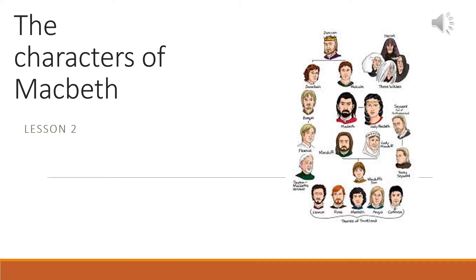Welcome to lesson two of Macbeth. We're going to meet the characters today. The play of Macbeth is a play of ambition where each character has a role in the debate. The question that Shakespeare poses to his audience is: what happens when ambition takes over a good man? The play deals with the build-up and therefore the consequences of those actions driven by ambition.